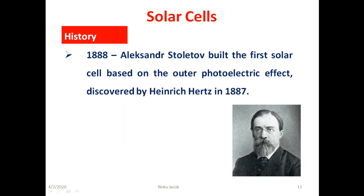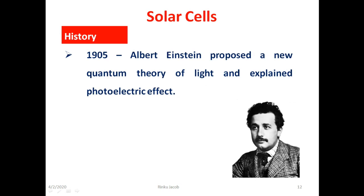In 1888 Russian physicist Alexander Stoletov built the first cell based on the outer photoelectric effect discovered by Heinrich Hertz in 1887. He also estimated the response time of the photoelectric current and discovered the solar cell's sensitivity with time. In 1905 Albert Einstein proposed a new quantum theory of light and explained photoelectric effect. For this he received the Nobel Prize in Physics in 1921.